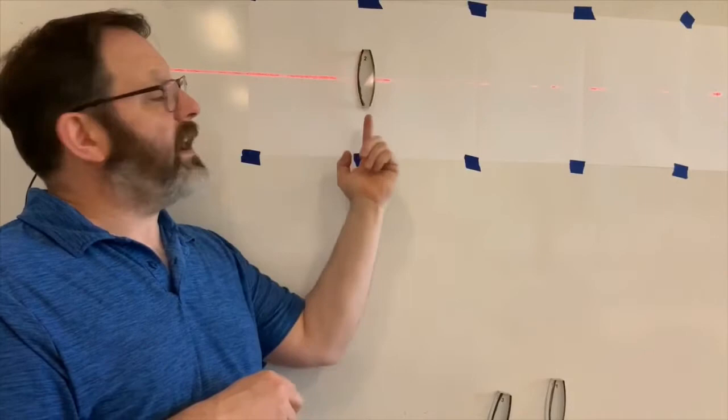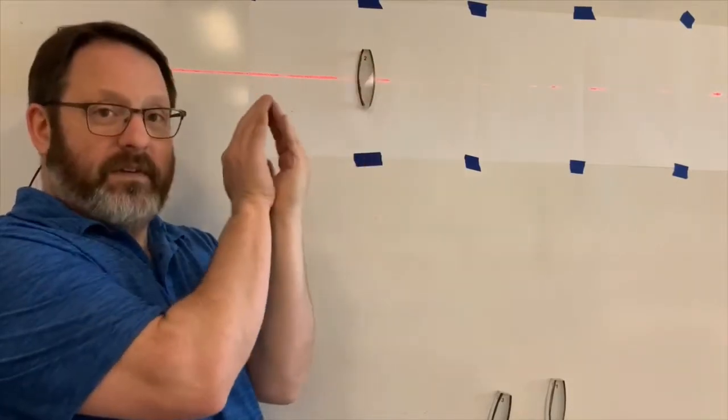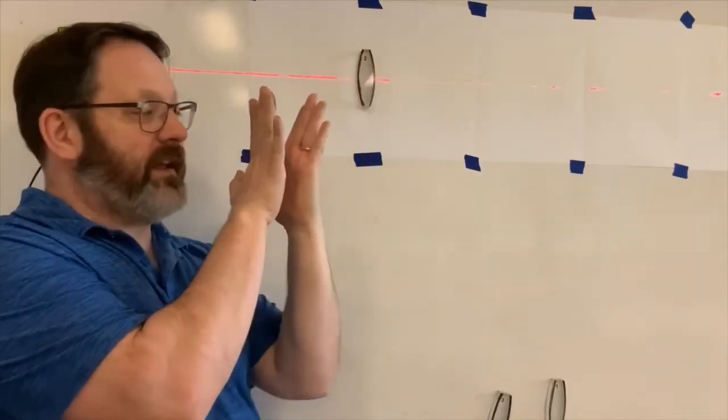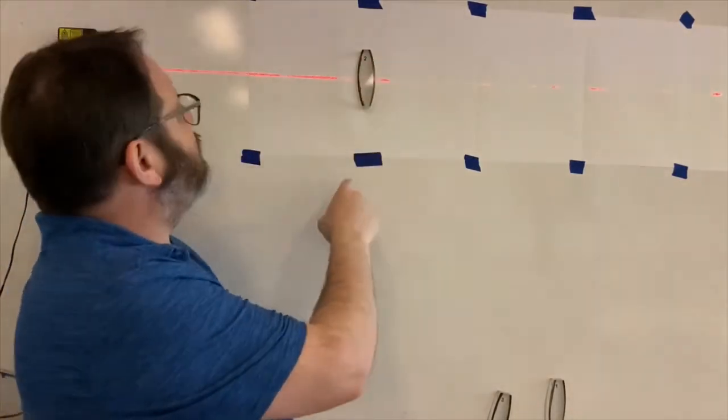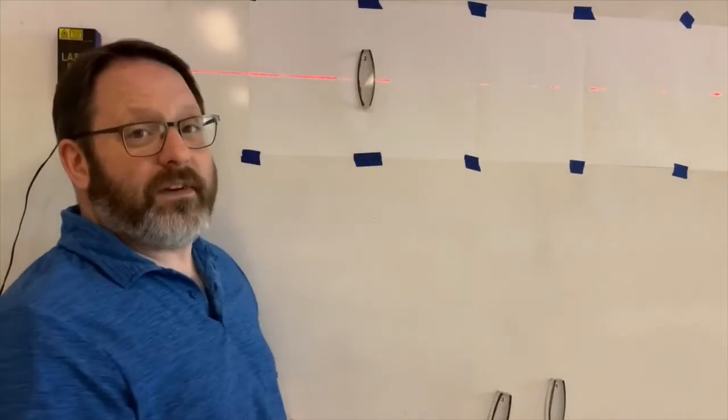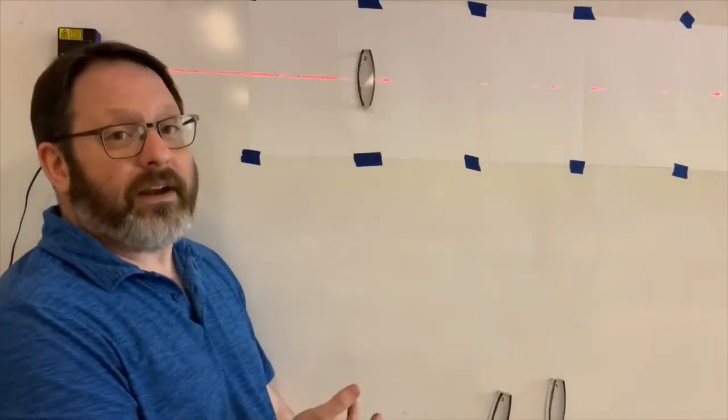So this is a convex lens, because it's outward on both sides. Concave would be in on both sides. So a convex lens like this, if you send light straight through the center of it, it doesn't bend the light at all.